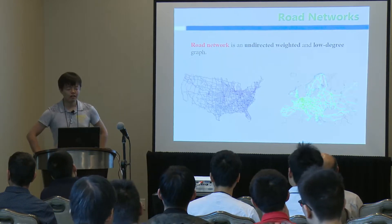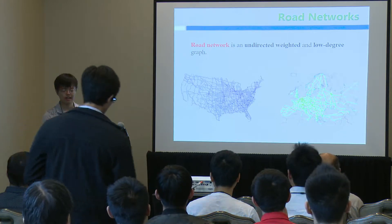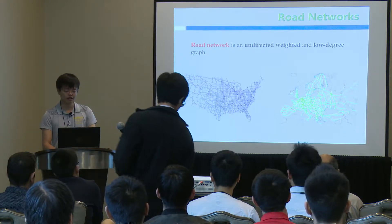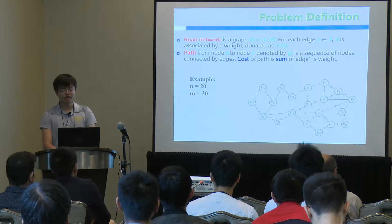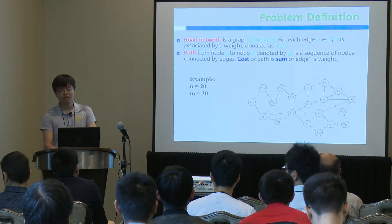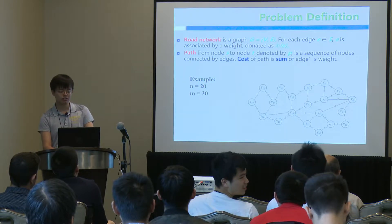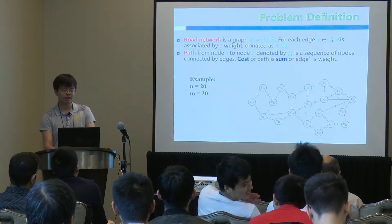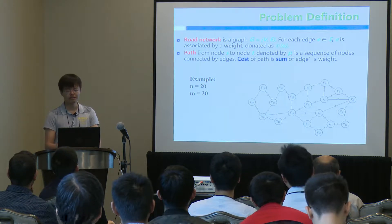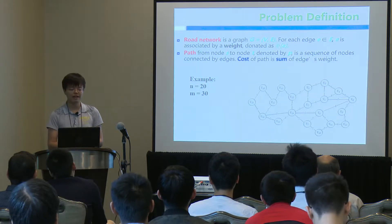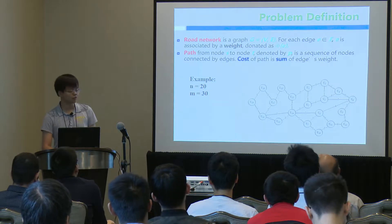At first, the road network is a directed, weighted, and no-degree graph. In graph theory, the road network is a graph, and for each edge E, it should be associated with a weight. The path in the graph is a sequence of nodes connected by edges. Here is an example of the graph.